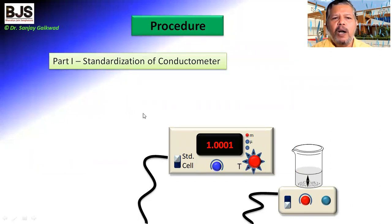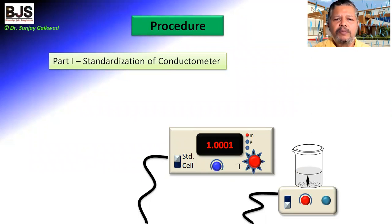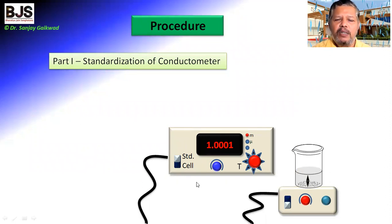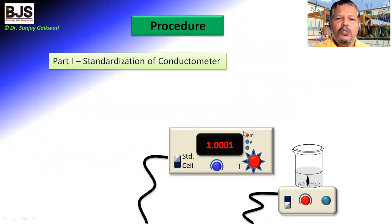In the first part of the procedure, there is standardization of the conductometer. For any determination or method, we have to standardize the instrument. We turn the knob on the standardization setting. Before starting the experiment, we have to switch on the conductometer for 15 minutes to allow a warm-up period for the display card as well as the indicator. The value displayed is 1.001 × 10⁻³, with the knob set to milli.